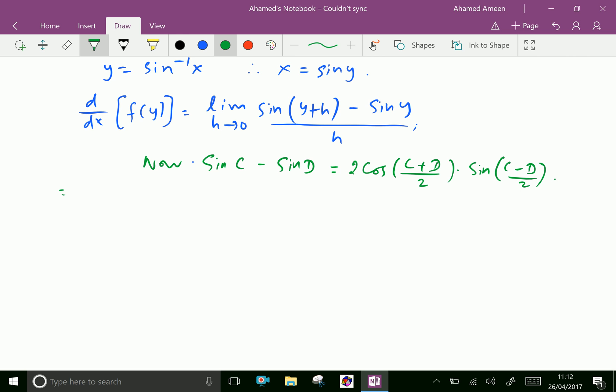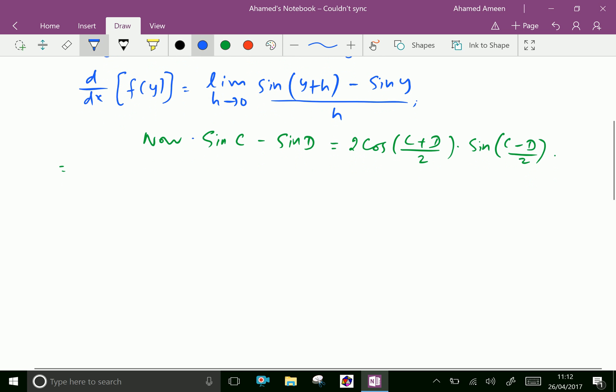By using these identities above, equals limit h tends to 0, where c is y plus h and d is y. Therefore, 2 cos of y plus h plus y over 2 times sine of y plus h minus y over 2.